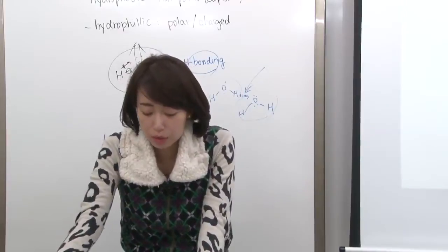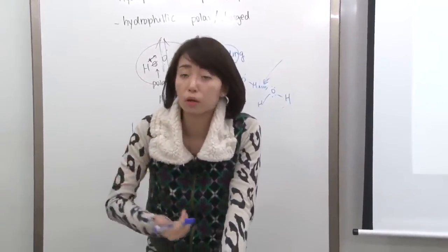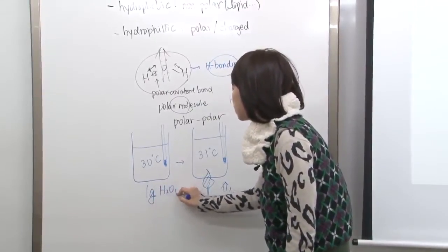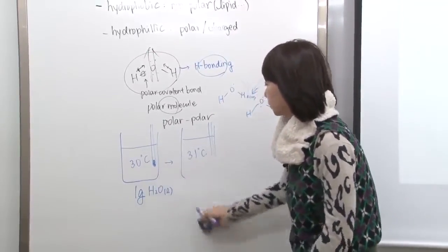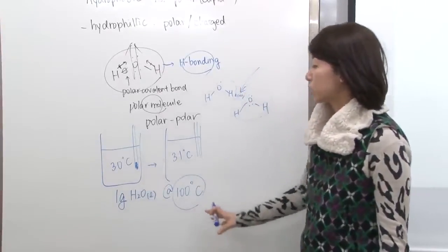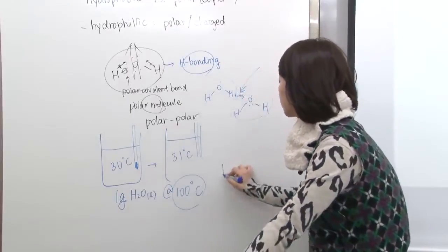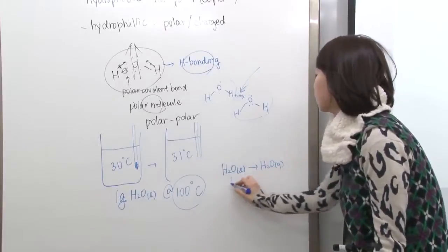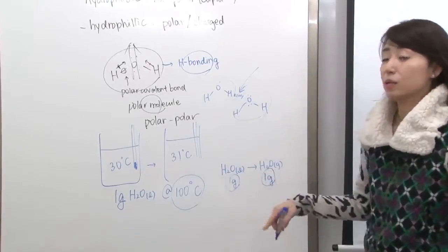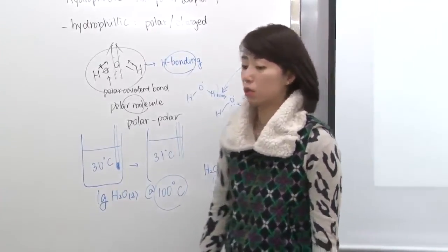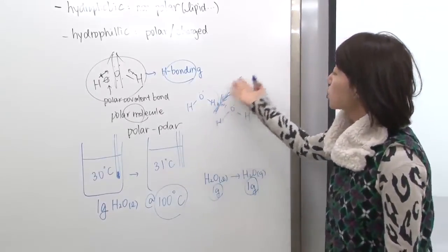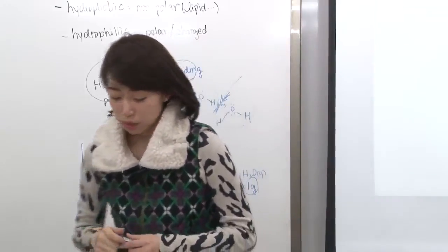Number two: water has high heat of vaporization. Heat of vaporization is the heat needed to vaporize water. At the boiling point, all of the liquid needs to convert to gas. For one gram of liquid at boiling point to fully evaporate, that amount of heat required is the heat of vaporization. With strong intermolecular force, more energy is needed to break bonds, so the heat of vaporization is also high.